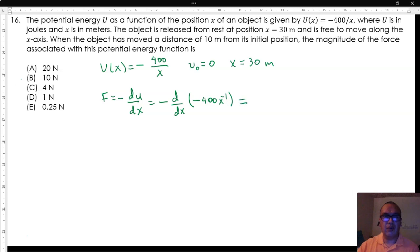That is equal to the negative of 400x to the negative 2, or negative 400 over x squared.